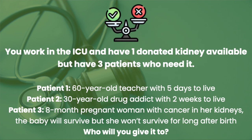Now thinking about medical ethics: you're working in ICU and have one donated kidney available but three patients who need it. One is a 60-year-old teacher with five days to live without the transplant; another is a drug addict in his 30s with kidney failure due to drug use who will die within two weeks; and lastly an 18-month pregnant woman with kidney cancer whose baby will survive but she won't live much past its birth without the transplant. Who would you give the kidney to? First, can I establish whether other kidneys might become available? Let's just view it as this one kidney — we don't know if another will come.